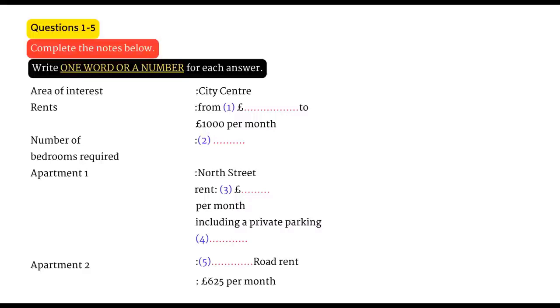Right, sir. We have, just give me a moment, please. We have two properties that might interest you. One is in North Street. It's a very nice apartment. But it's £750 a month. But that includes a private parking space. Hmm. £750. That's a bit higher than I'd like to go, really. Do you have anything less expensive?